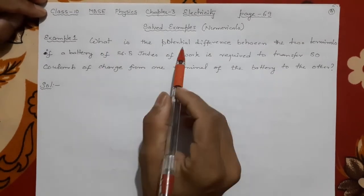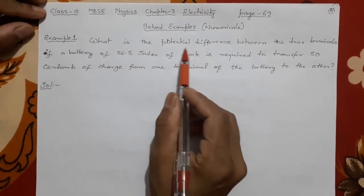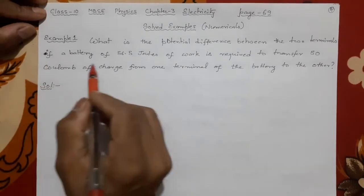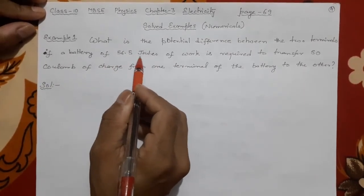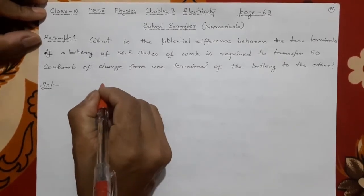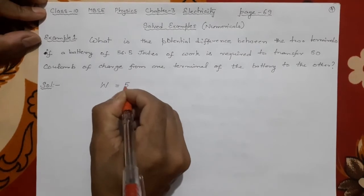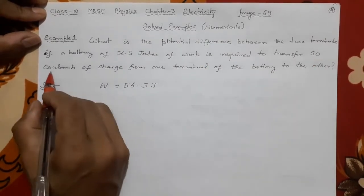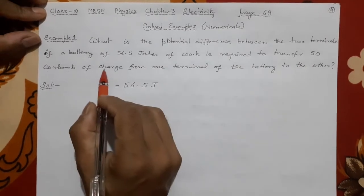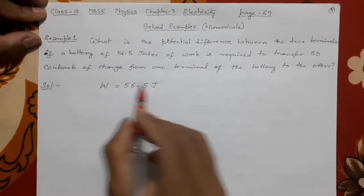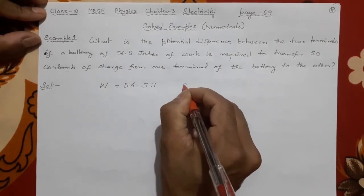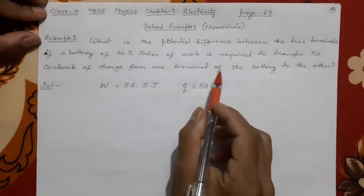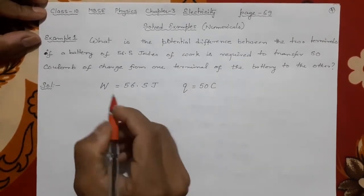This numerical is already solved in your textbook but it is explained here. We are asked to find the potential difference, that means V_b minus V_a, between the two terminals of a battery. The work done is 56.5 joule — from the unit you should know it is work done. The given values are: W = 56.5 J (joule is the SI unit, so no change is required) and the charge to be transferred is 50 coulomb, so Q = 50 C.